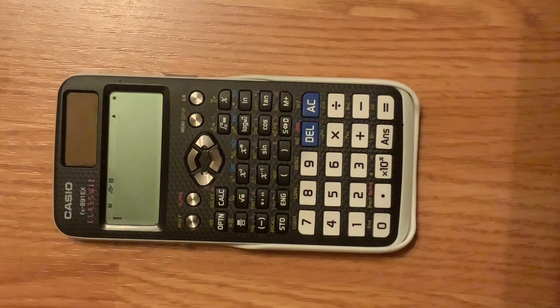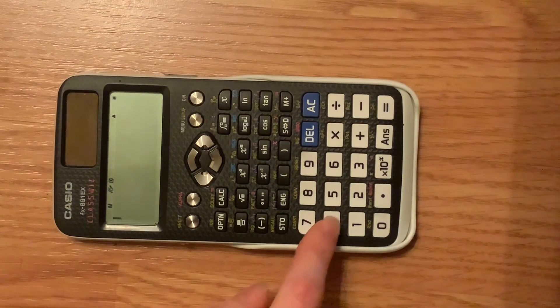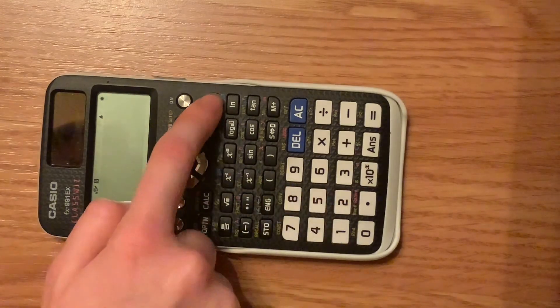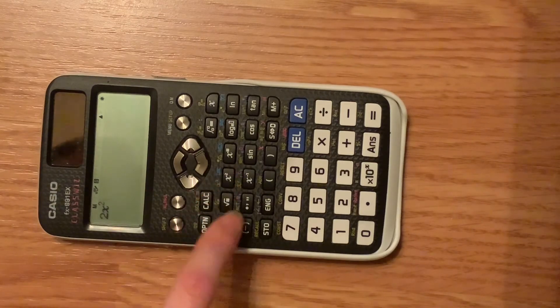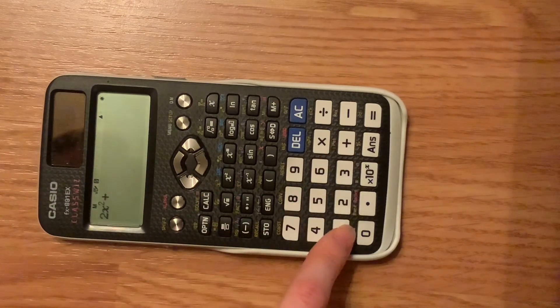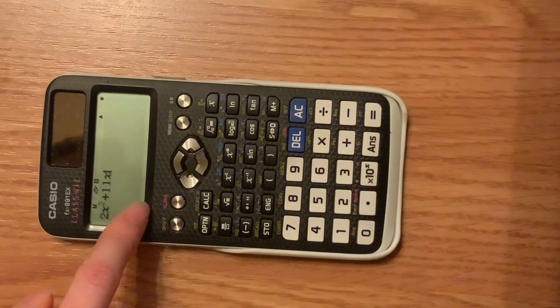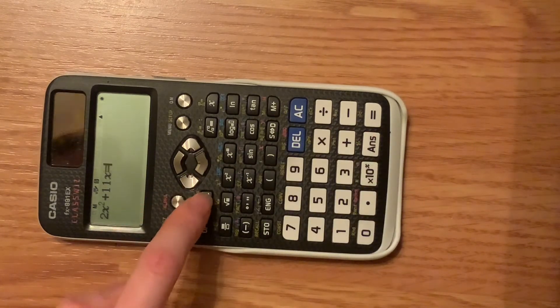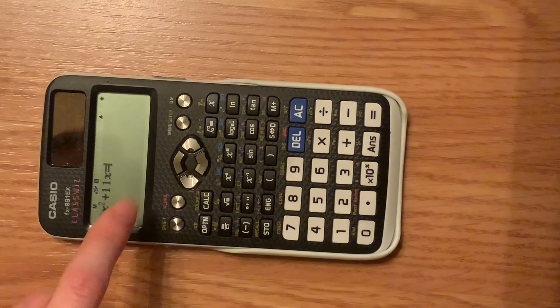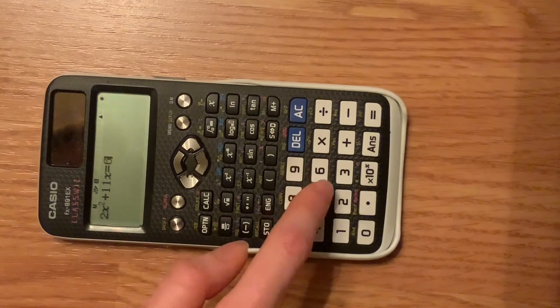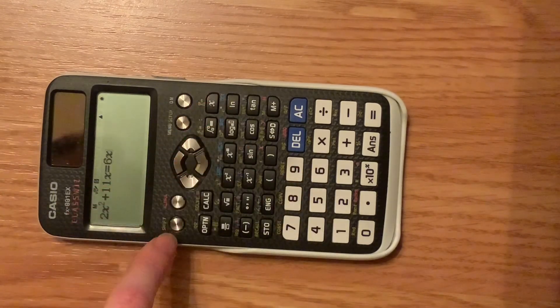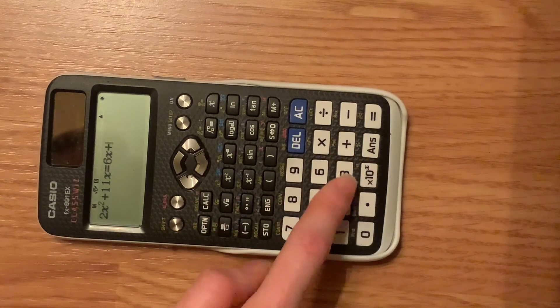So I have a quadratic equation here. It is 2x squared plus 11x equals, so alpha calc, and then for the other side,